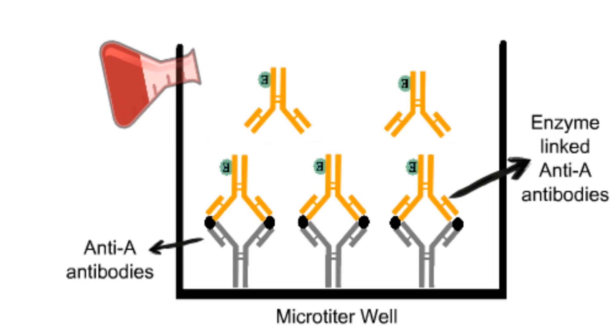After incubating the enzyme-linked antibodies, the well is washed to remove unbound enzyme-linked antibodies. Then chromogenic substrate is added to the well. The enzyme bound to the antibodies will convert the substrate into a colored product.